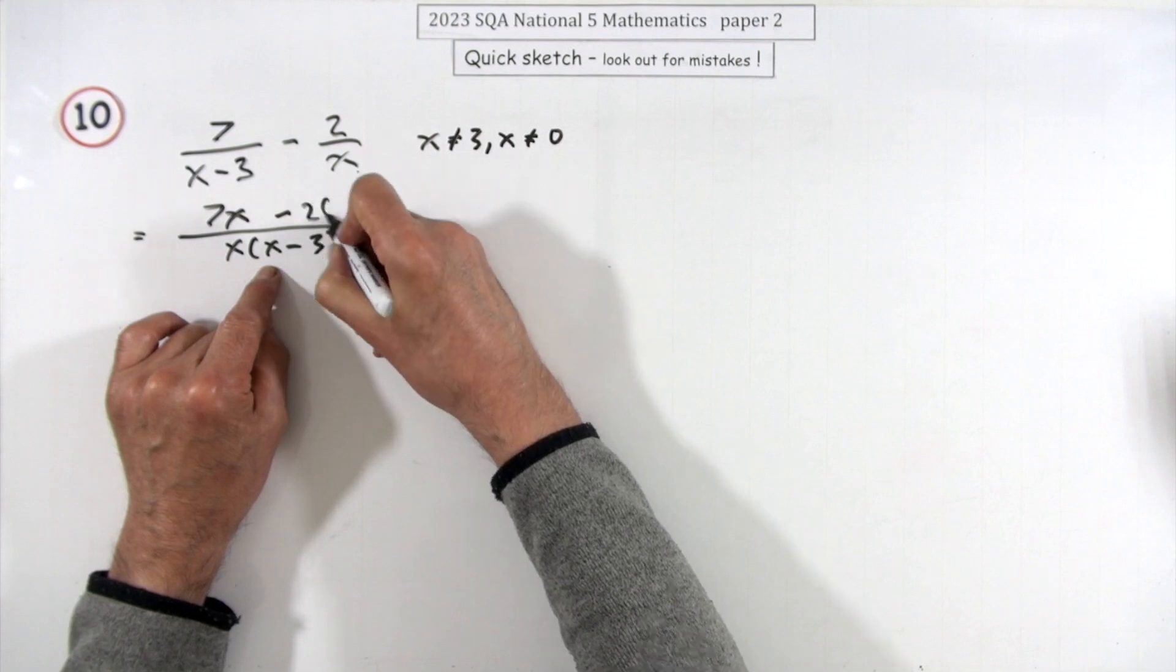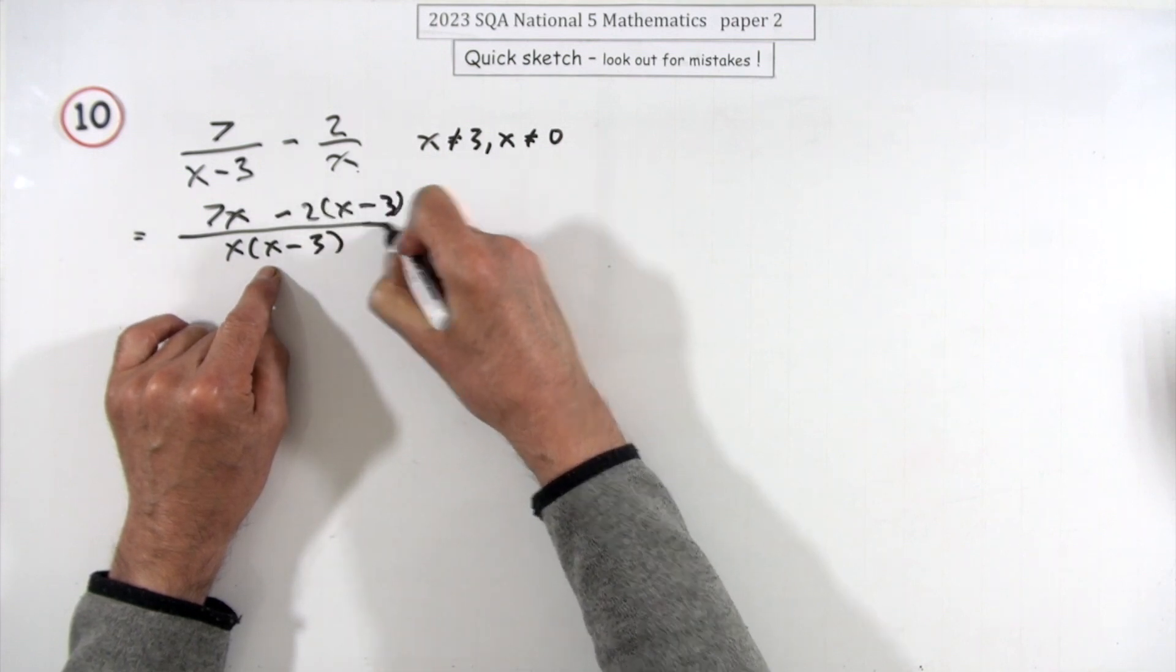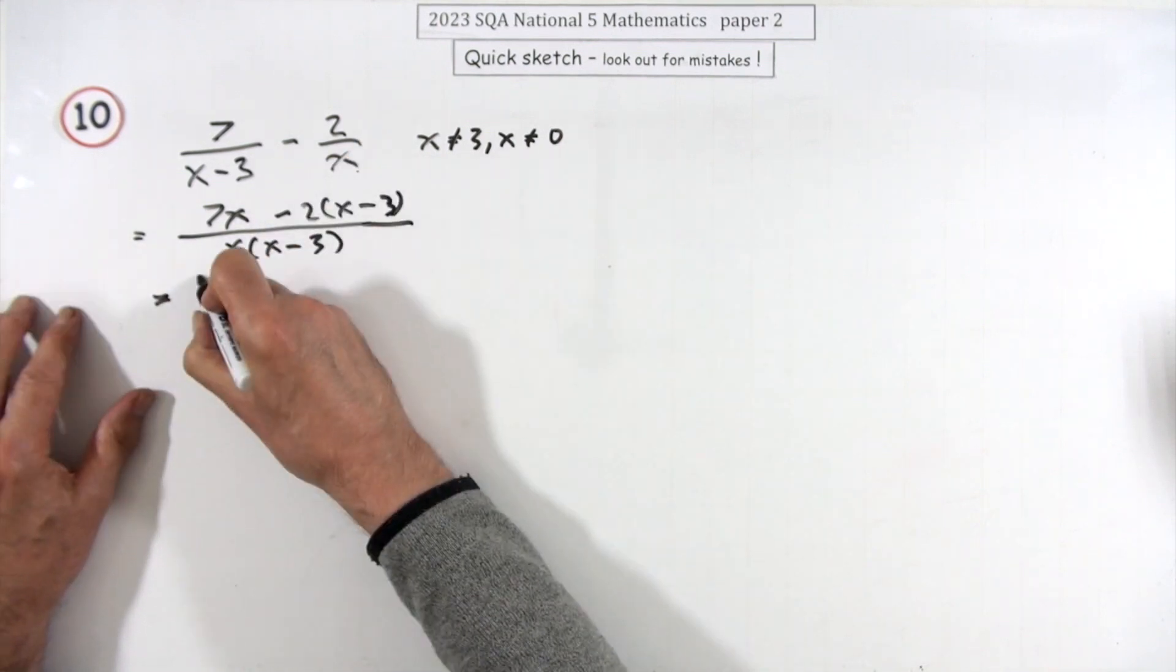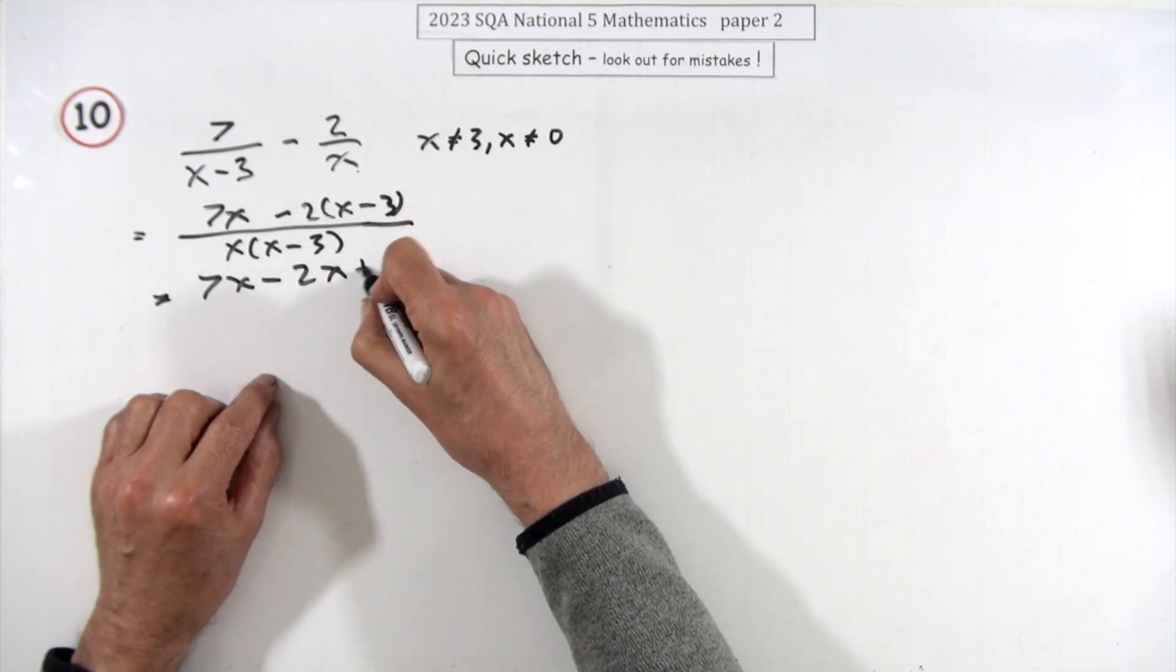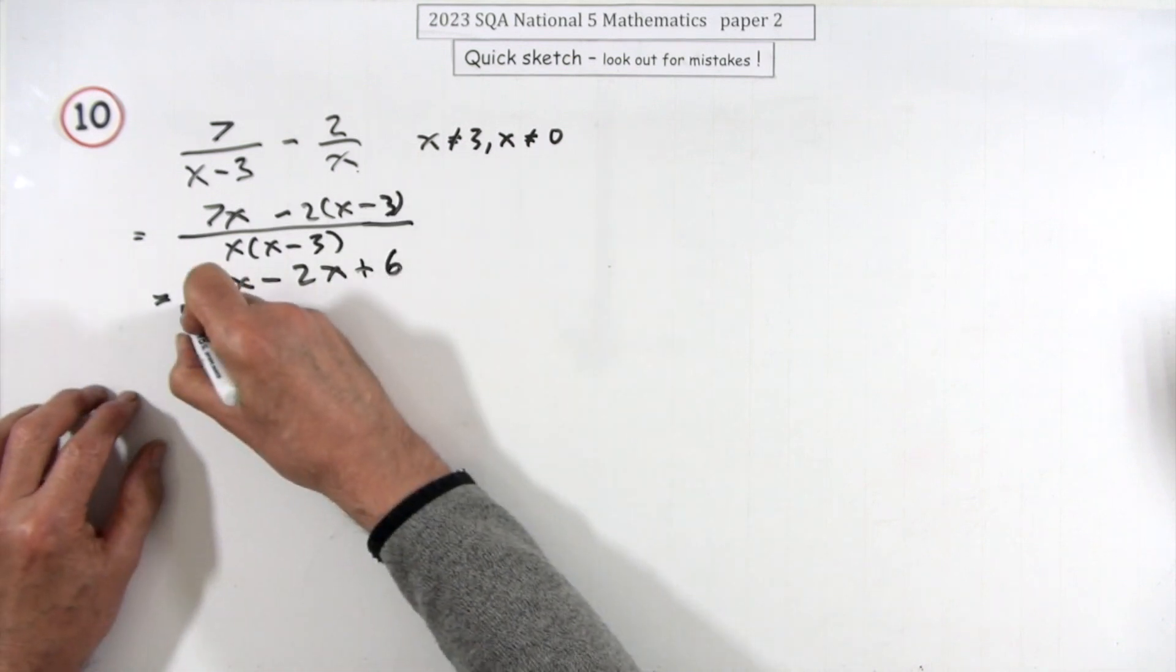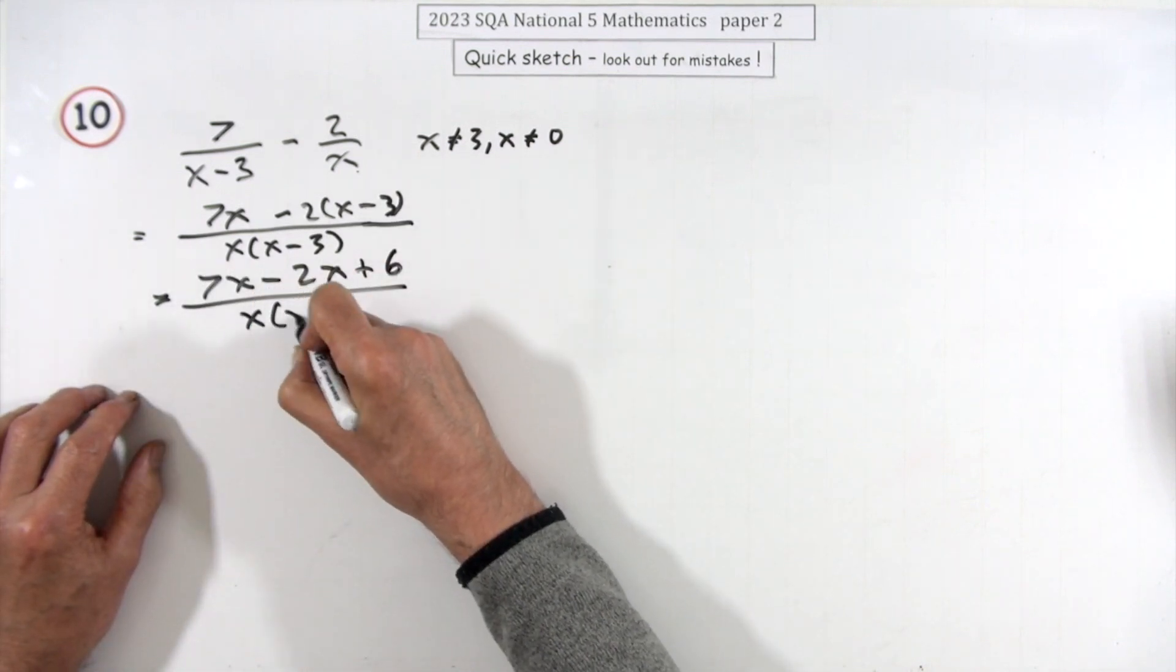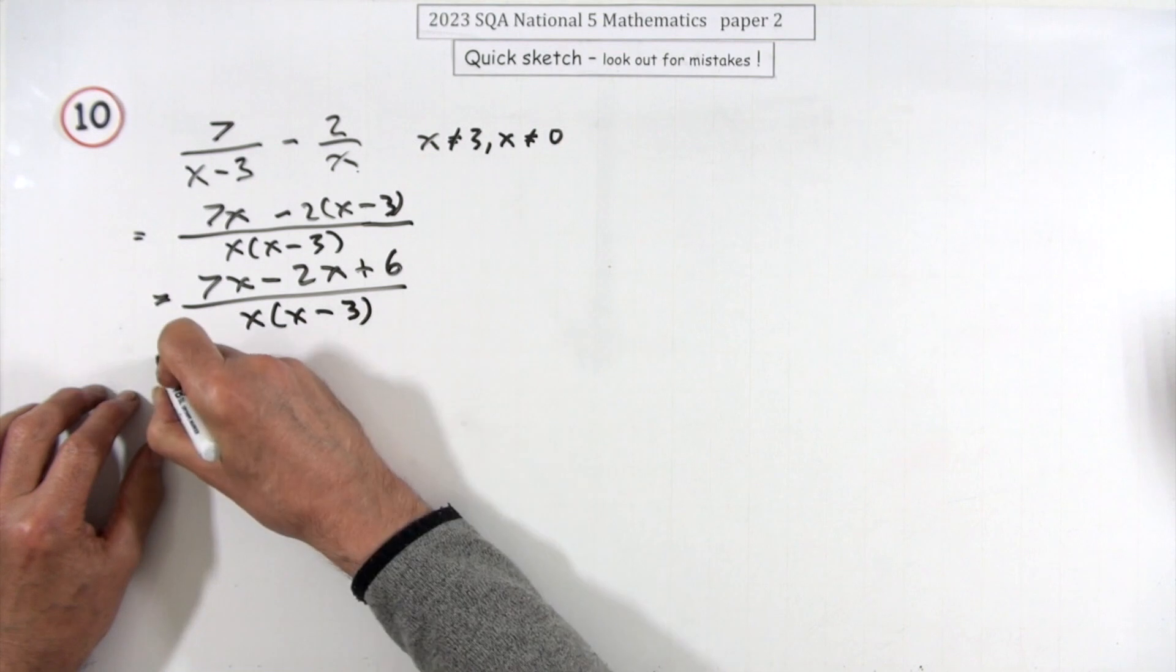That's already got the x, so it'll need the x minus 3 multiplying it. Now just multiply that out, so you've got 7x minus 2 times x, but minus minus plus 6.